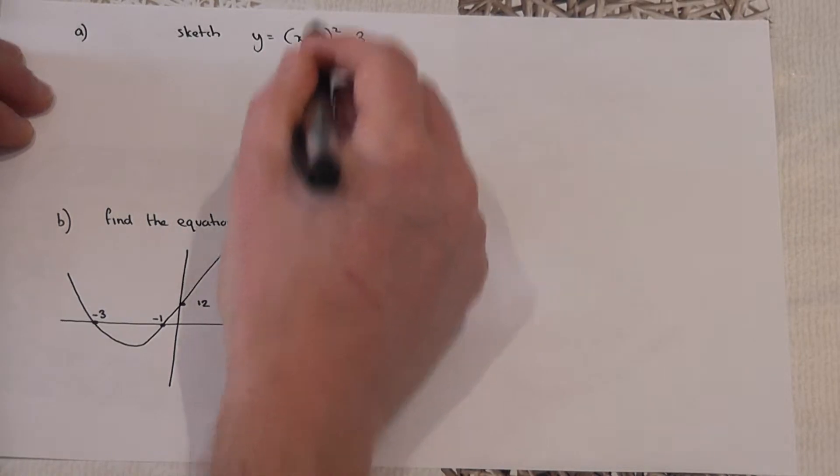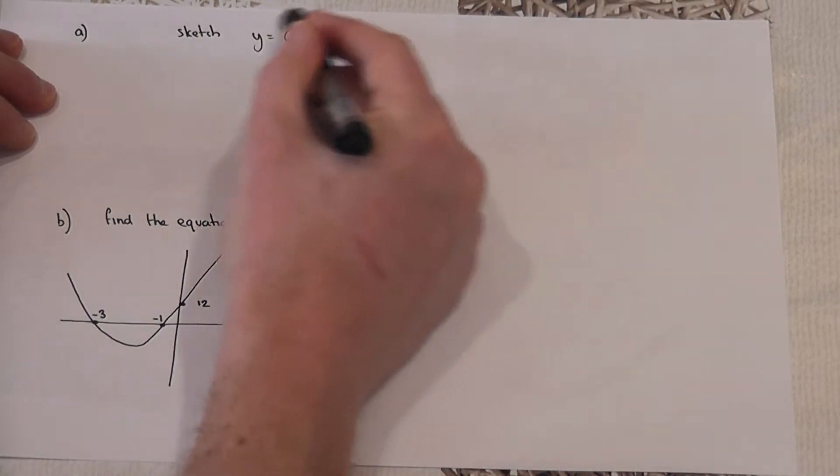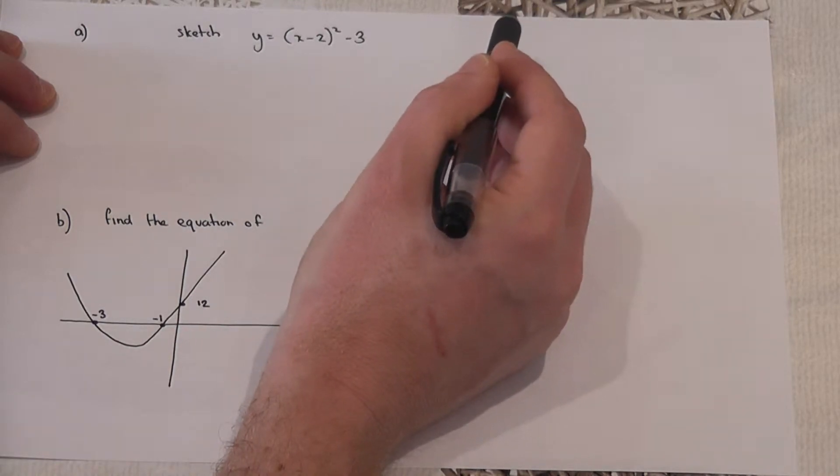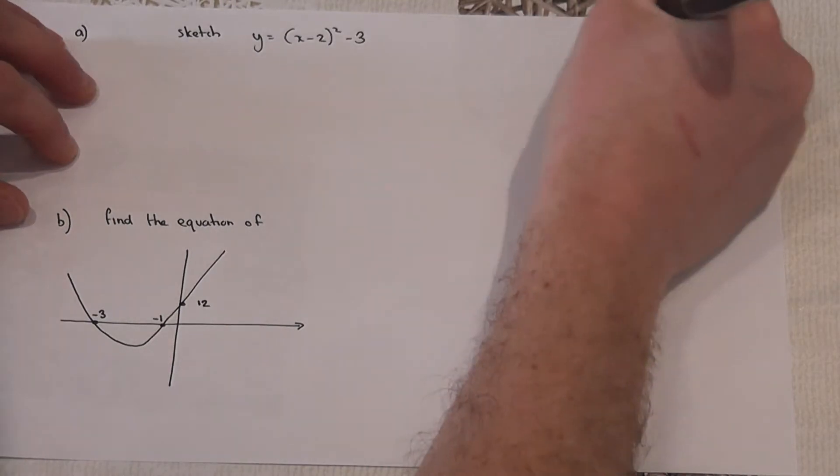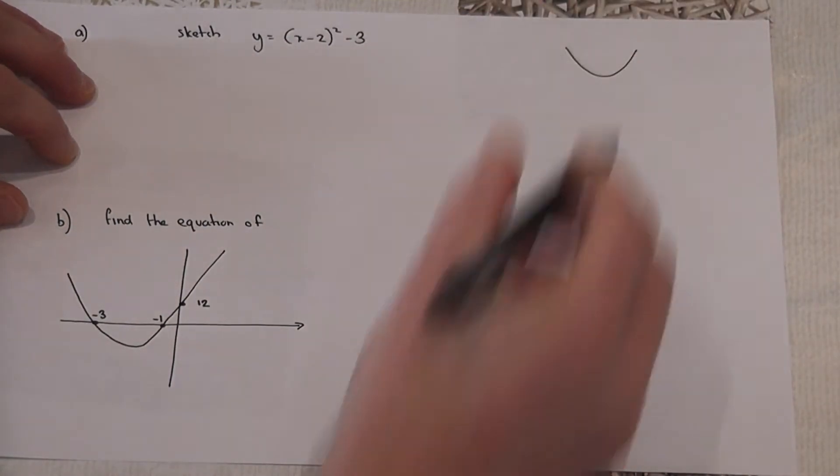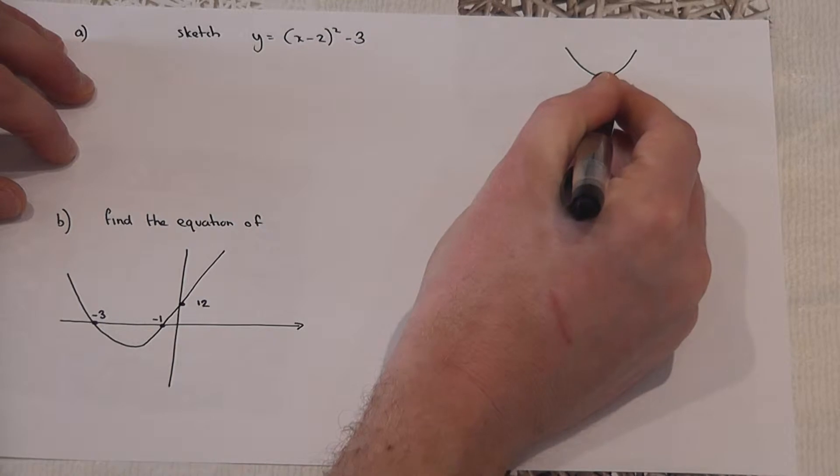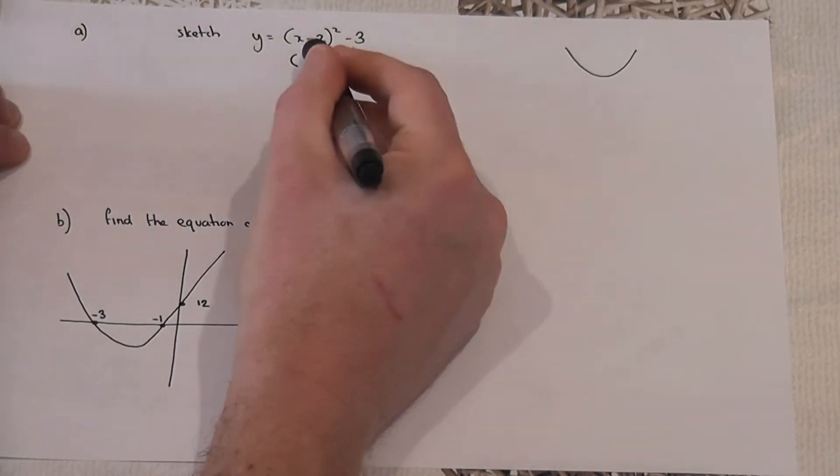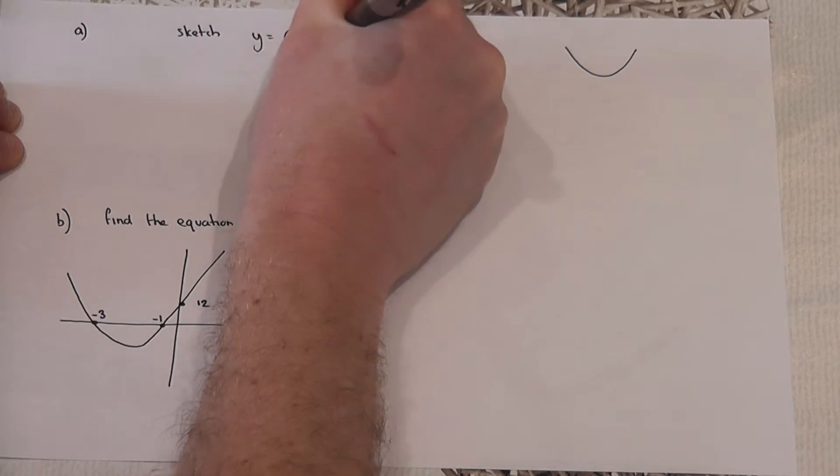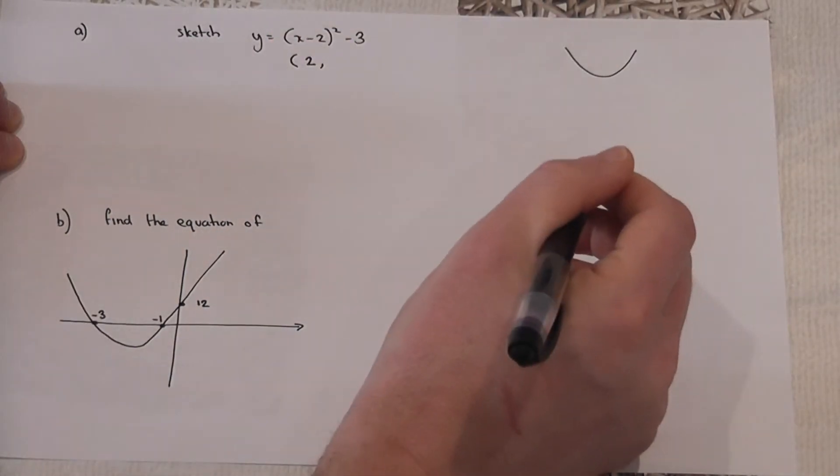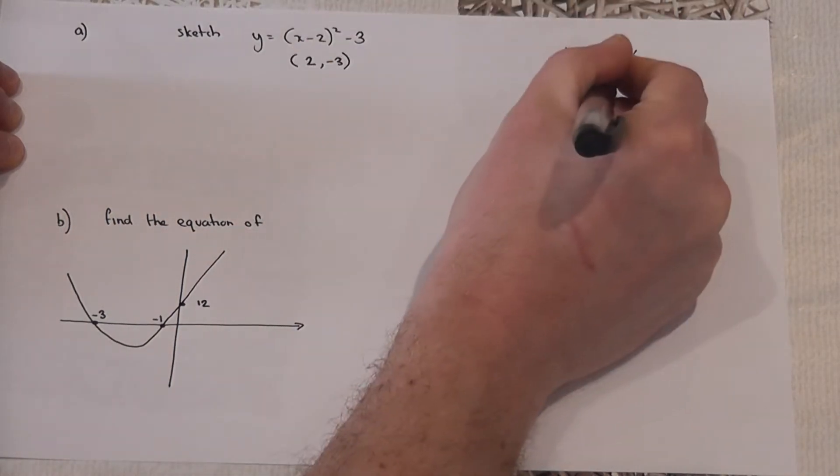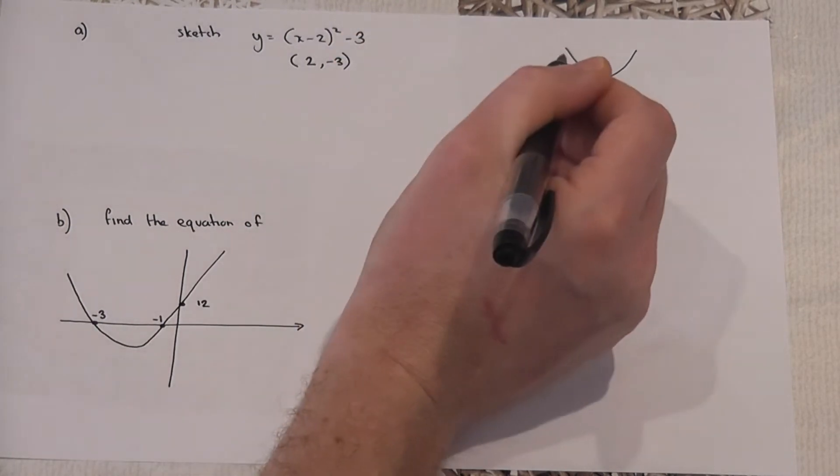Now when you've got an equation in this form, this actually tells us where the bottom or the vertex of the graph is. This is basically a smiley face parabola, and the bottom of the graph is at a certain coordinate. The trick here to get the actual coordinate of the bottom of the graph is to change the sign of the number in the brackets—that becomes plus two—and then keep the sign of the number at the end. So the coordinate of the bottom of the graph is at (2, -3).